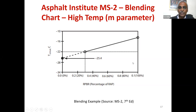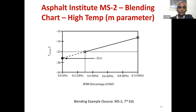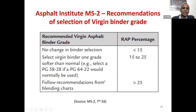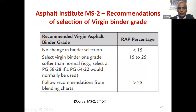Two blending charts are shown — one for low temperature and one for high temperature — plus one more for low temperature and one for intermediate temperature (fatigue cracking). This is how the Asphalt Institute recommends establishing equivalence for a given proportion and given virgin binder. MS2 recommends that if you use less than 15% RAP in your mix, no change in binder selection is needed. For 15 to 25% RAP, if your target binder is PG 64-22, you use one grade softer, that is 58-28. For more than 25% RAP, you perform the blending chart analysis to find which softer grade binder to use, but in no case will you use anything softer than two grades from the target.